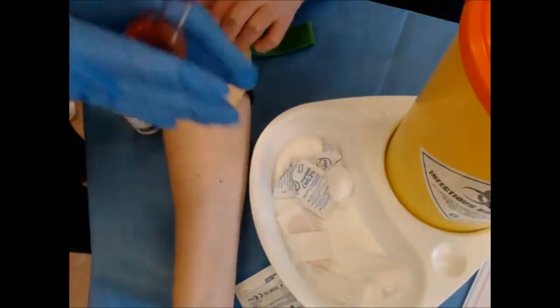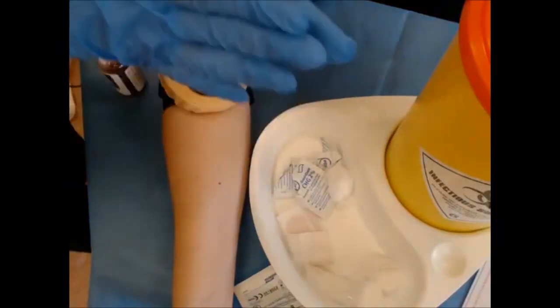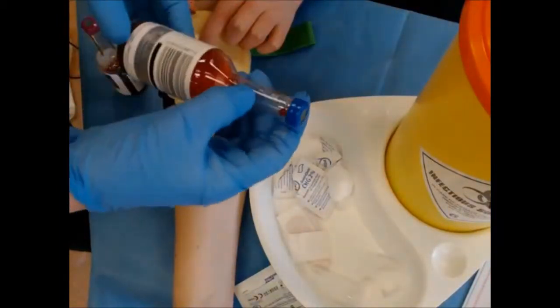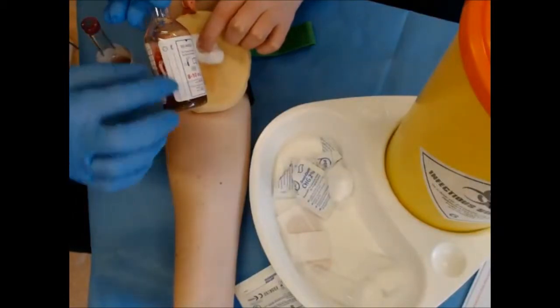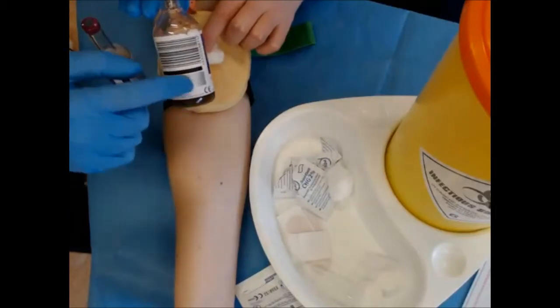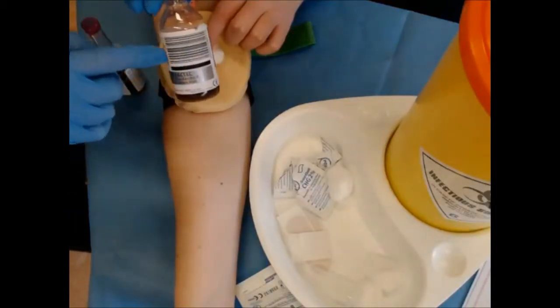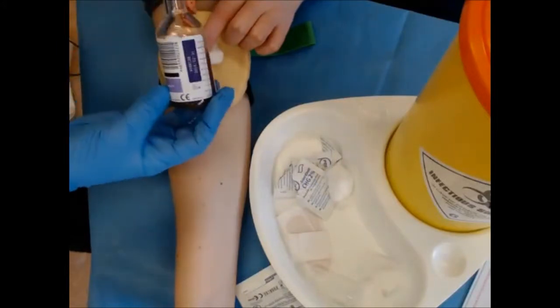To mix the samples, just roll them in your hands. Don't invert them. Make sure that you accurately label each bottle so you can fill in the patient's details by hand or you can put an addressograph. If you are using an addressograph, do not cover the bar code because that's used by the lab to identify the patient and the sample.